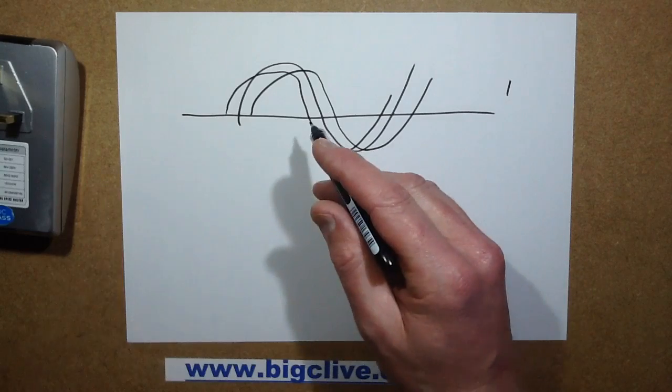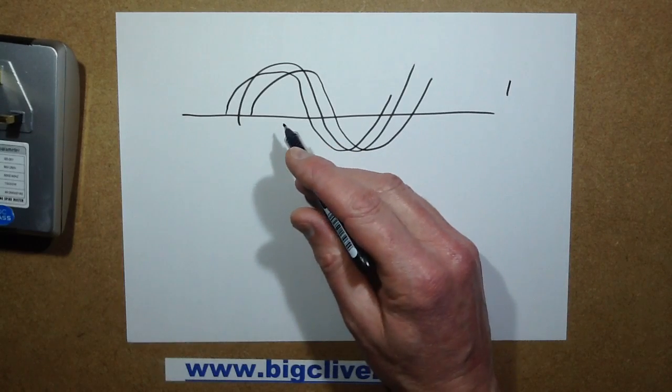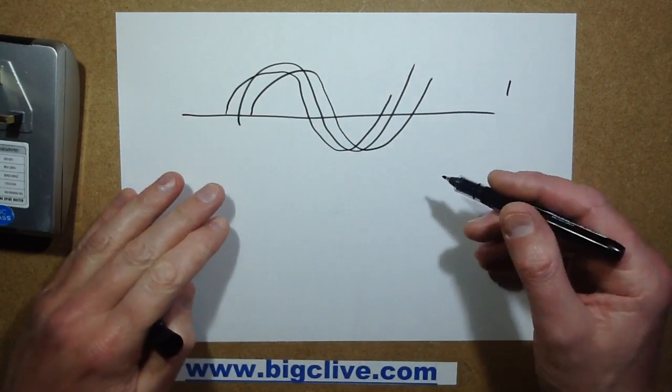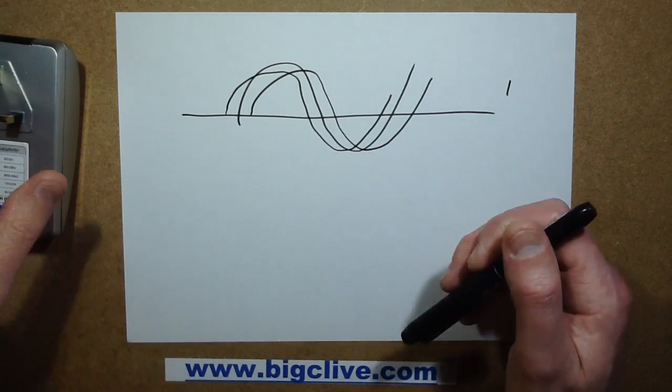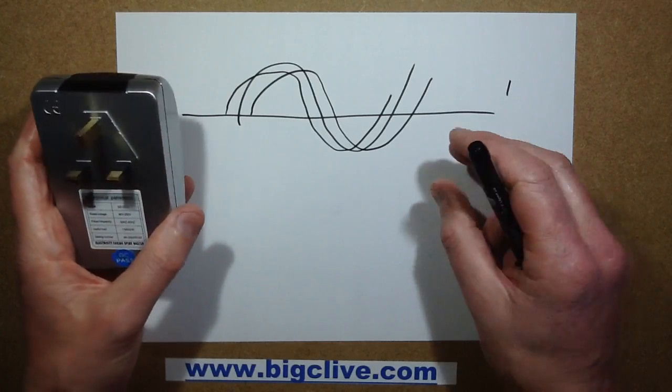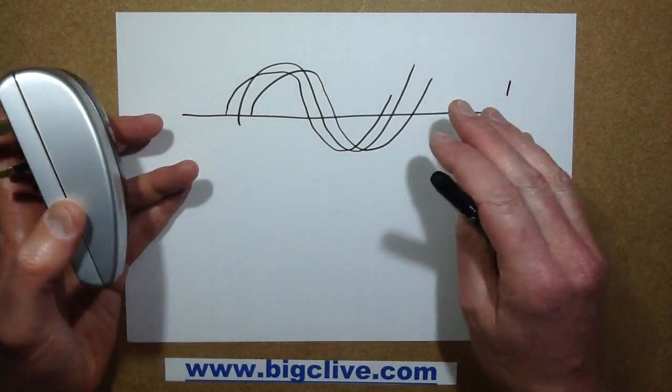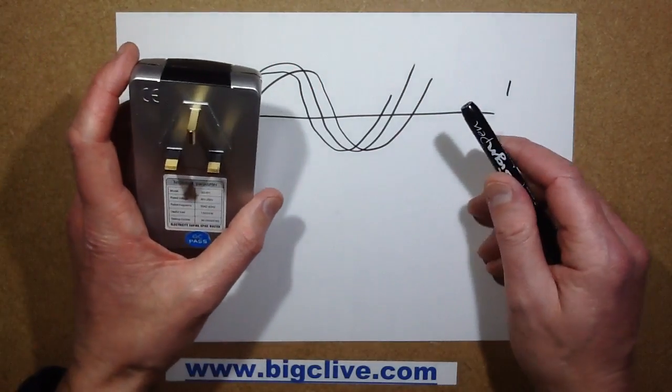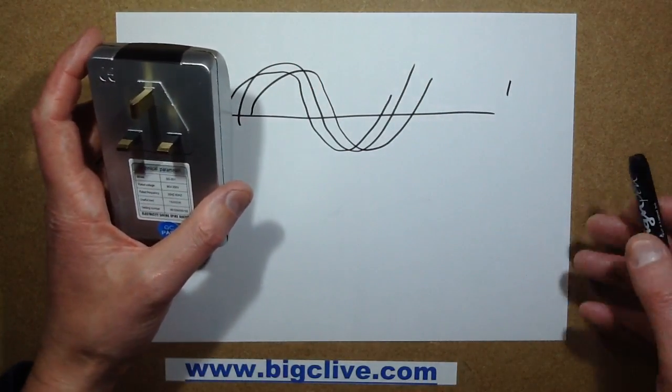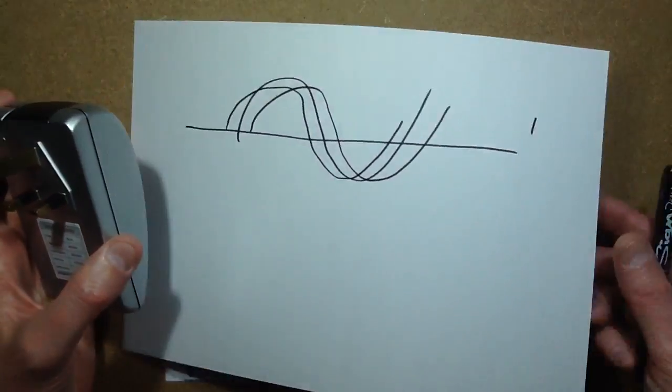The whole point is that if you've got an inductive or capacitive load, it looks as though it's taking more power than it actually is. In industrial applications where you've got motors, they'll stick a capacitor across the motor to compensate for that. It brings the perceived power back into unity. Let's open this up then.